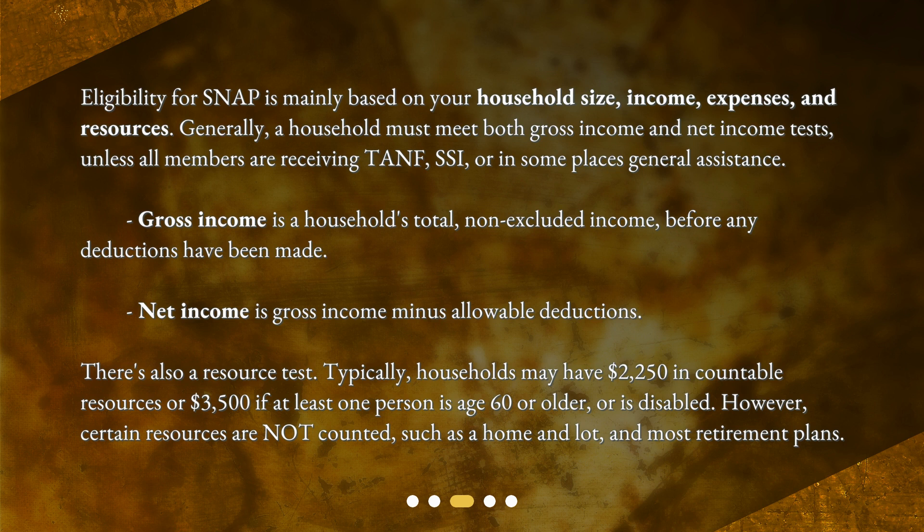Gross income is a household's total non-excluded income before any deductions have been made. Net income is gross income minus allowable deductions. There's also a resource test. Typically, households may have $2,250 in countable resources, or $3,500 if at least one person is age 60 or older or is disabled. However, certain resources are not counted, such as a home and lot and most retirement plans.